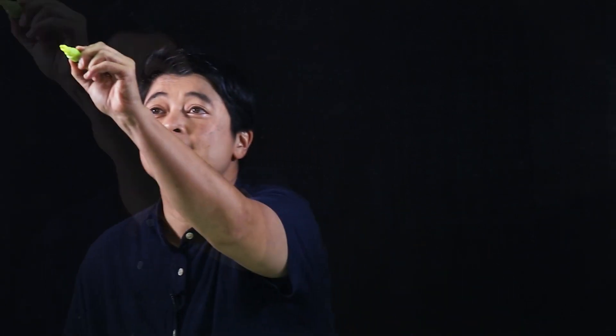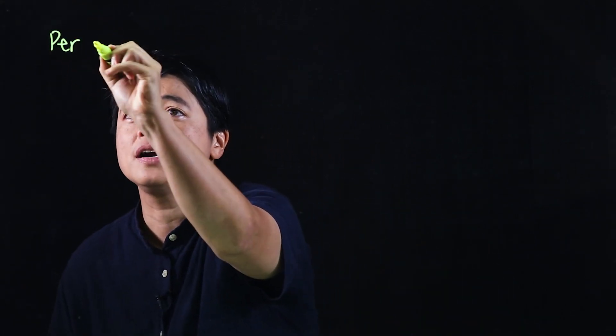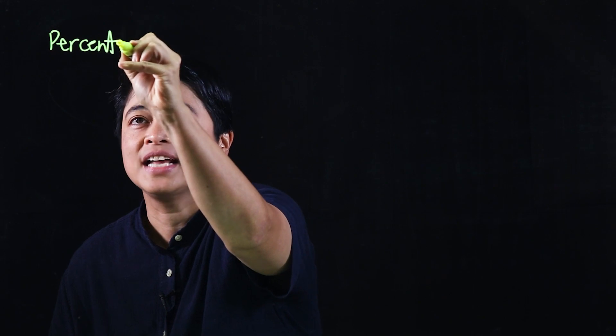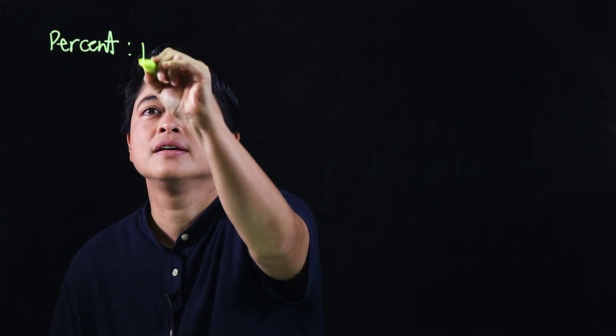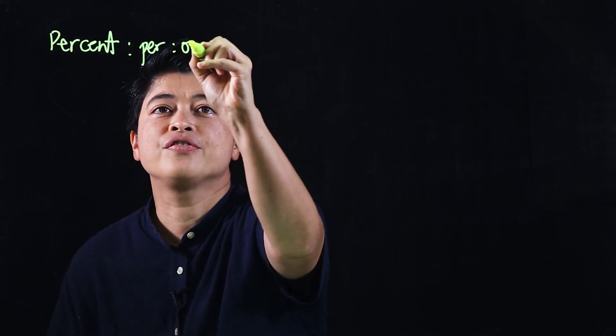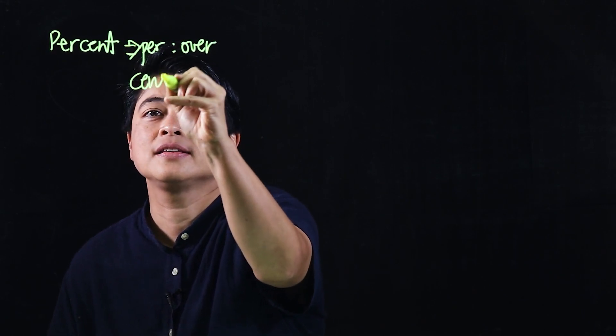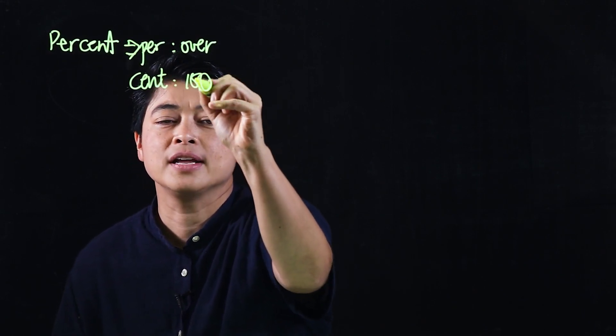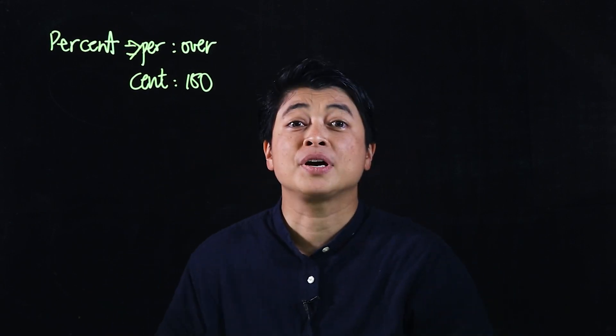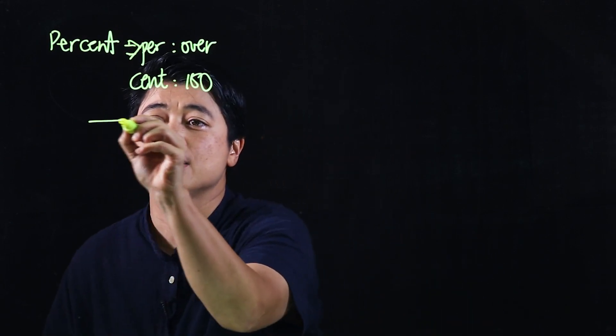Chapter 10 lesson 1 is about percent. Percent really just means per cent, so per means over and cent means 100. When you say percent, that's technically saying over 100.